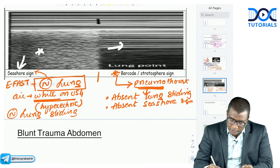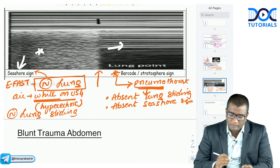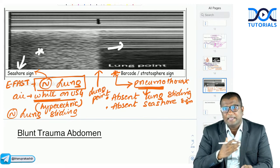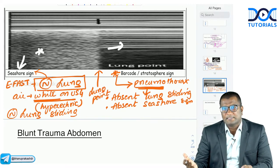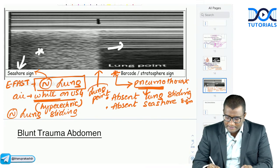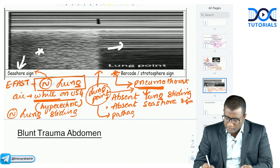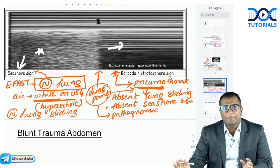The point of transition between normal lung sliding (seashore sign) and absent lung sliding (barcode/stratosphere sign) is called the lung point. The lung point is pathognomonic of pneumothorax. So remember: seashore sign = normal lung; barcode sign = pneumothorax; lung point = point of transition, pathognomonic of pneumothorax.